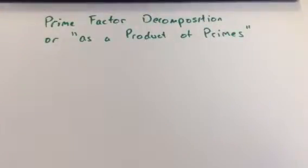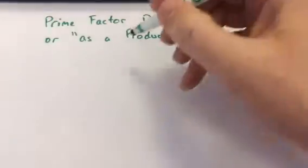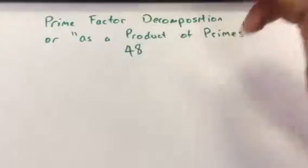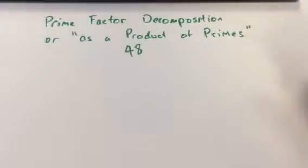Hi, this is Mr. MinuteMaths, just a quick skill lesson on prime factor decomposition, or writing a number as a product of its prime factors. Say we're given 48, and we've got to think of what primes it makes.